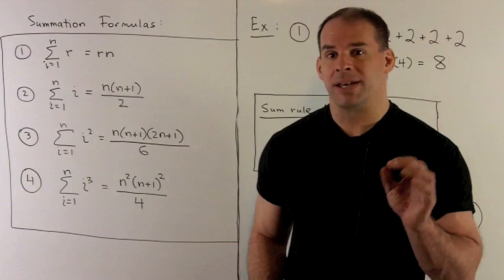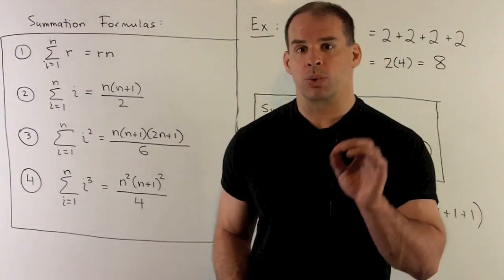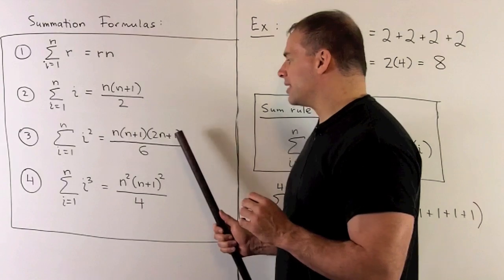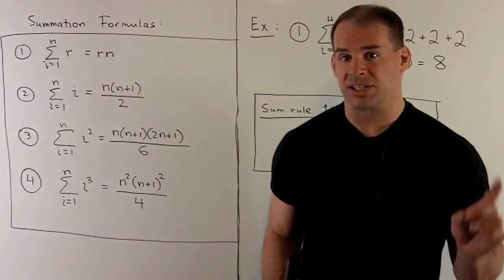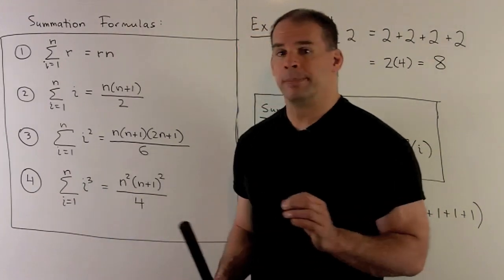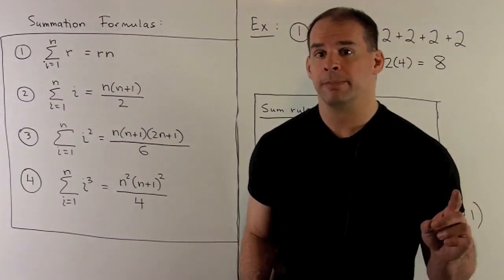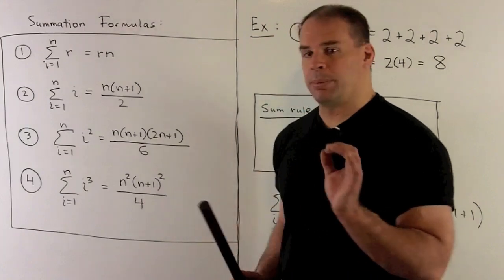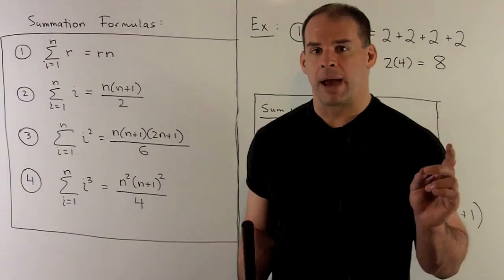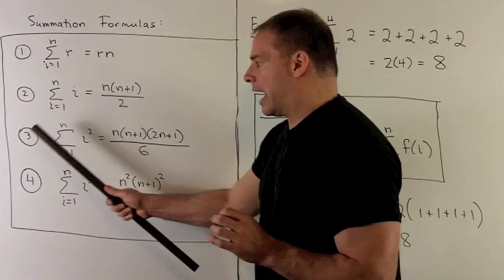The third formula is the sum as i goes from 1 to n of i squared — that's 1 squared plus 2 squared plus 3 squared, all the way up through n squared — which gives n times n plus 1 times 2n plus 1, divided by 6. Finally, the sum as i goes from 1 to n of i cubed gives n squared times n plus 1 squared, divided by 4. For most Riemann sum examples we'll see the first three formulas, with the fourth appearing every once in a while.